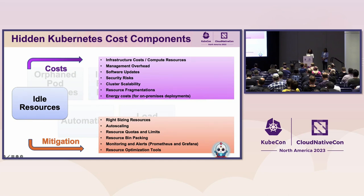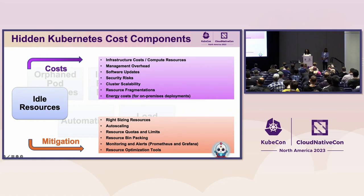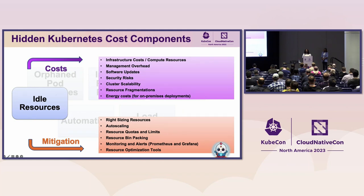Idle resources are a prime target for adversaries looking to exploit weaknesses. They can become a security risk if not properly maintained because underlying software goes unnoticed, and adversaries will seek to exploit that if given the opportunity. Resource fragmentation is another issue — clusters can have sporadic pockets of available resources that can't be efficiently used by active workloads, which also has negative cost implications for your organization.